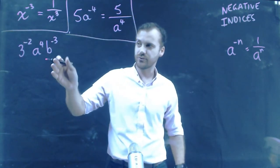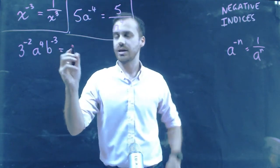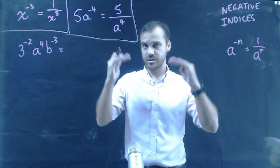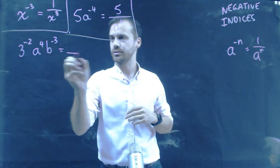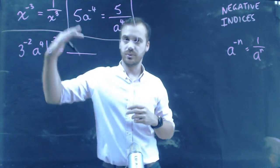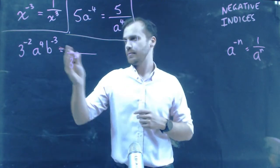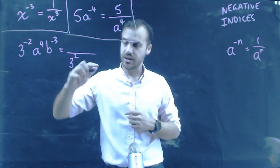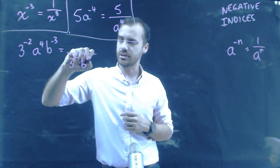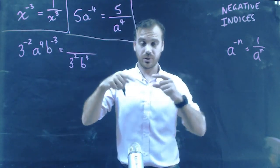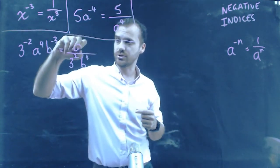3 to the negative 2, a to the 4, b to the negative 3. Some of this stuff belongs on the bottom of the fraction. Some of this stuff on the top of the fraction. 3 to the negative 2, we can move that to the bottom, and it becomes 3 to the positive 2. b to the negative 3, we can move that to the bottom, and it becomes b to the positive 3. And a to the 4, that's already a positive indice, so that can stay on the top.